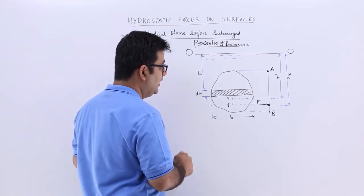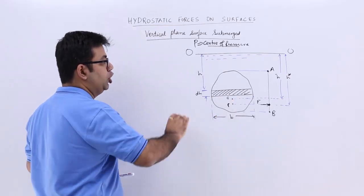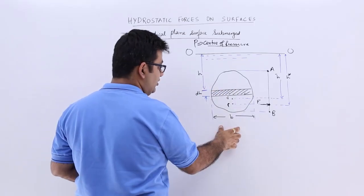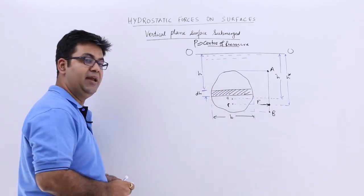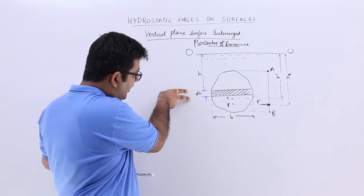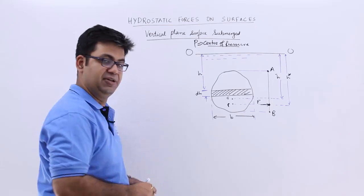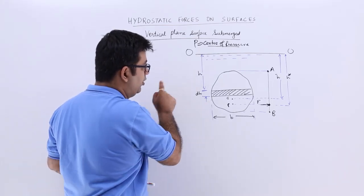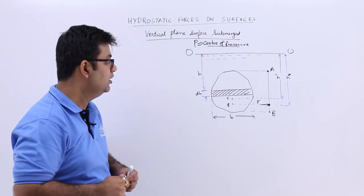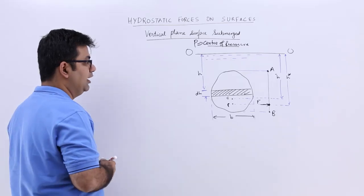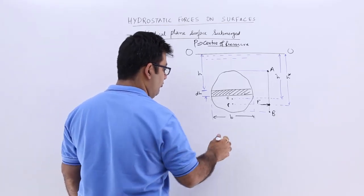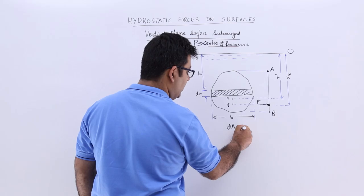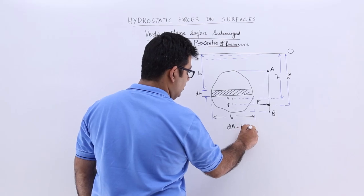Now let us assume a small strip on this surface. The strip has a width of B and a small height DH, and this strip is at a distance small H from the free surface. So the small area DA is equal to B into DH.